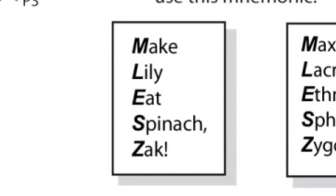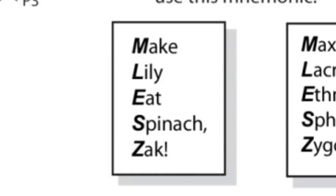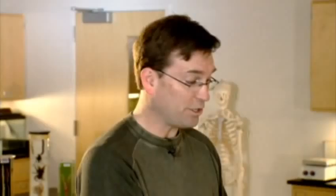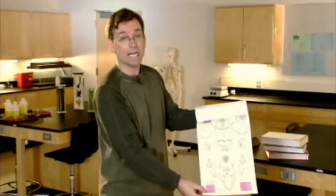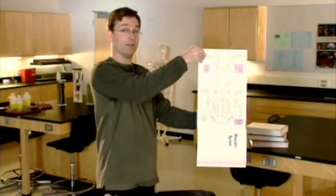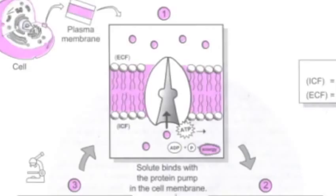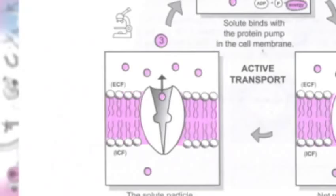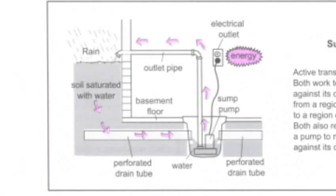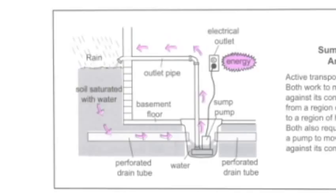The mnemonic is 'Make Lily Eat Spinach Sack,' which stands for the maxilla, lacrimal bone, ethmoid bone, sphenoid, and zygomatic bones. Another unique feature is a fold-out page showing all the bones of the skull on one side and all the bones of the skeletal system on the other as a handy reference. Another analogy in the physiology book describes how cells pump out different substances — compared to a sump pump. Just as a sump pump pumps water out of your basement using electrical energy, cellular energy is used to pump substances across the plasma membrane of a cell.